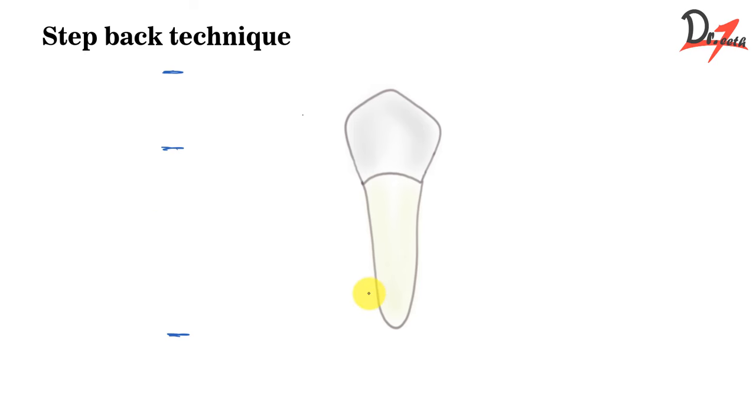So here the same thing happens. We have a file here. So we go all the way apically till here, let's say, and then we gradually proceed backward, means first of all, we will prepare the apical portion and then we will prepare the middle of the canal and then we will prepare the coronal most of the canal. So we have already reached the apical portion and then we are progressing backward. That is why it is called the step back technique. So if you remember it this way you will never forget.